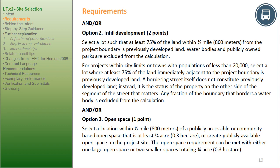Option 3, Open Space, for 1 point: select a location within 1.5 miles (800 meters) of a publicly accessible or community-based open space that is at least 3.4 acres (0.3 hectare), or create publicly available open space on the project site. The open space requirement can be met with either one large open space or two smaller spaces totaling 3.4 acres (0.3 hectare).